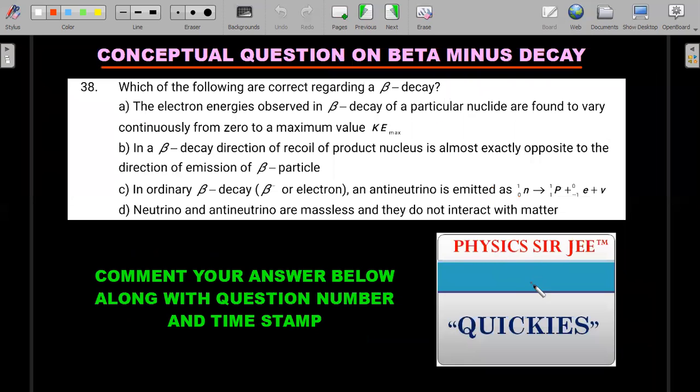Let's start with the practice problems one after another. Most of them are in the quickies section. First one is on the conceptual situations of beta minus decay. How well you understand beta minus decay theoretically so that you are ready for your JEE Advanced examination. Which of the following are correct? One or more than one correct answer. Comment your answer below along with the question number, let's say question number is 38 here, and also with the timestamp of this particular video. Comment all the six keys in one comment so that I can reply to them by going through your comments.